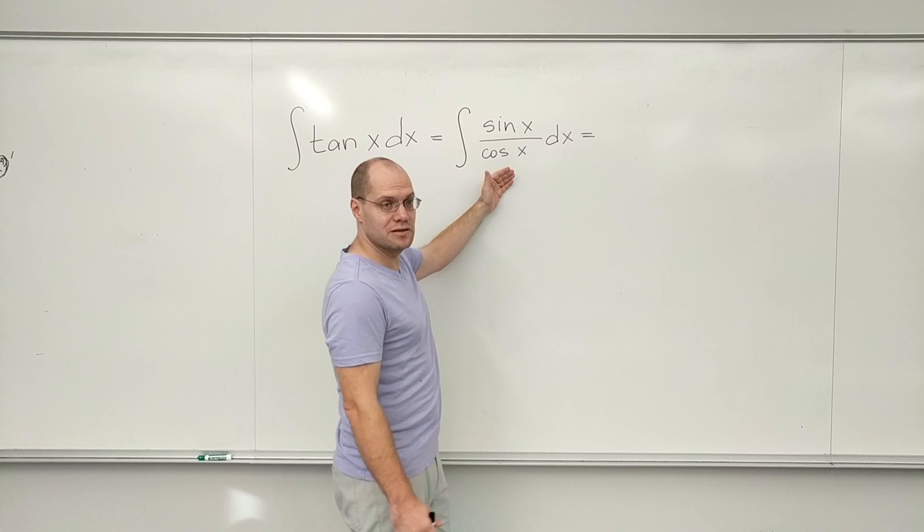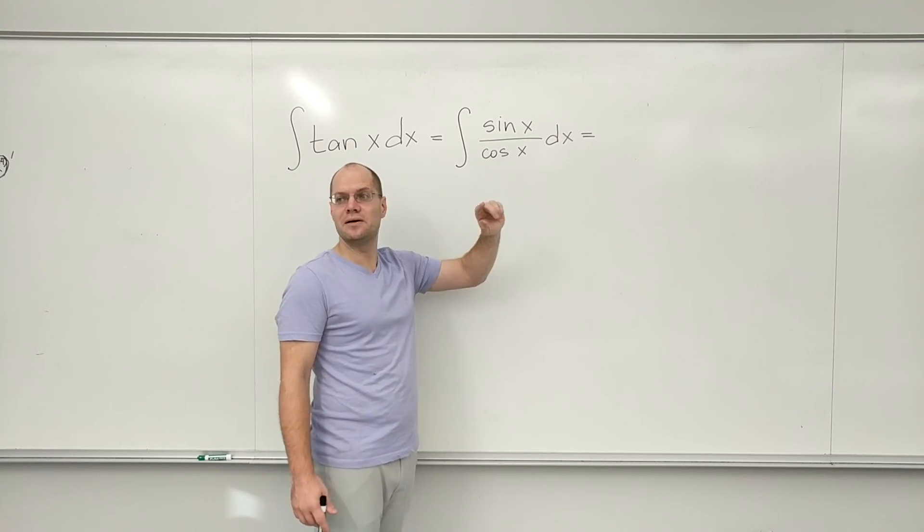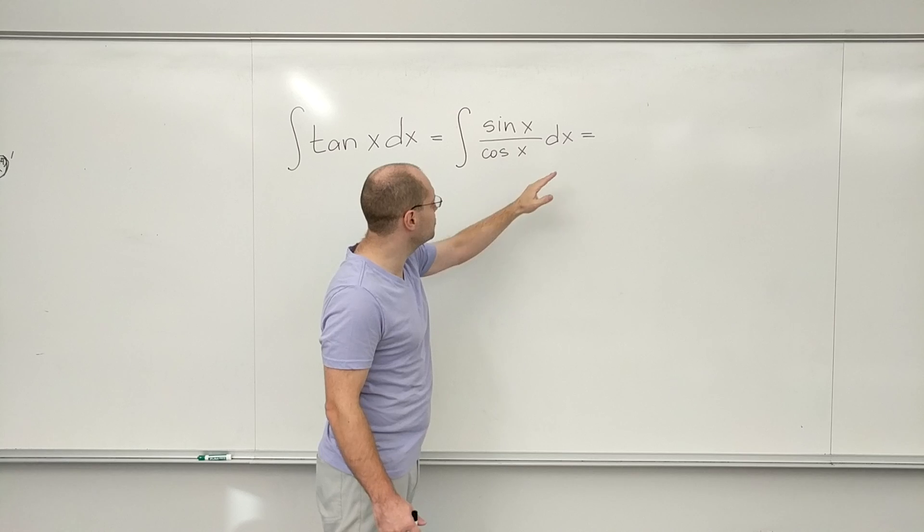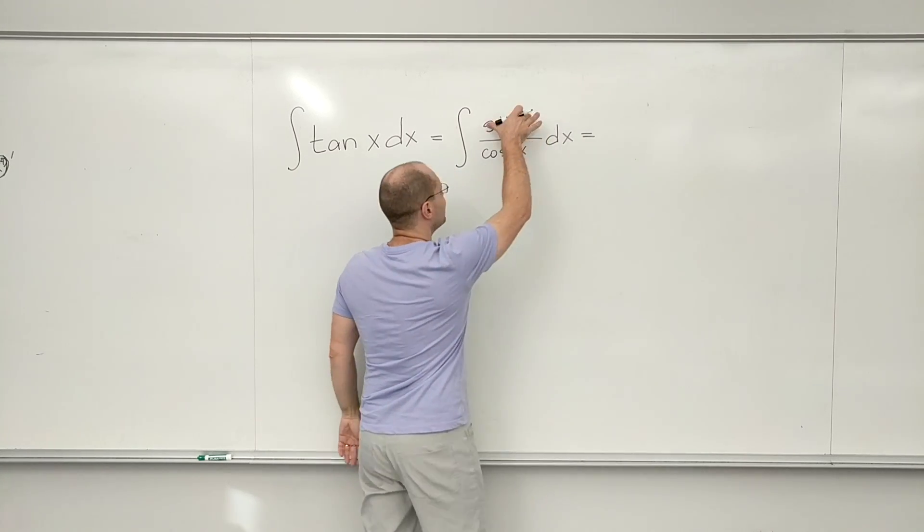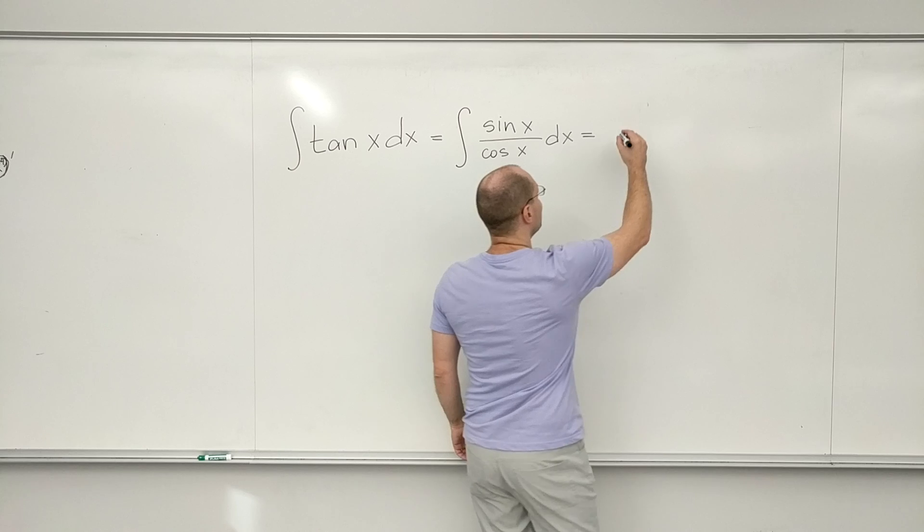So it has to be log of cosine of x, but let's be careful with the minus sign. So let's do that extra step where we recognize that this is minus the derivative of the cosine and just write it like this.